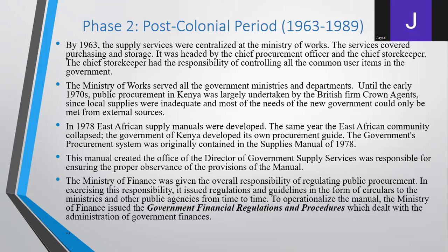The second phase was between 1963 and 1989. At this stage, procurement was centralized under the Ministry of Works and headed by somebody referred to as the chief procurement officer. We also had the chief storekeeper, whose work was to ensure they controlled all common user items in government. Common user items are items used across the board by various institutions — for example, photocopying paper. The work of the storekeeper was to control these items.